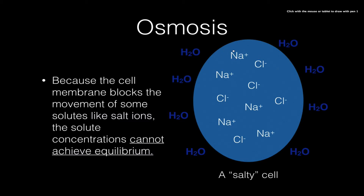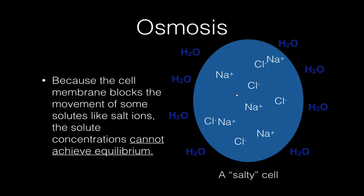So if this membrane here was not semi-permeable and the sodium and chlorine ions could freely move in and out, then we wouldn't really have osmosis, because what would happen is we'd just have the diffusion of these ions. But these ions can't get across the membrane — they are blocked by the semi-permeability of the phospholipid bilayer.